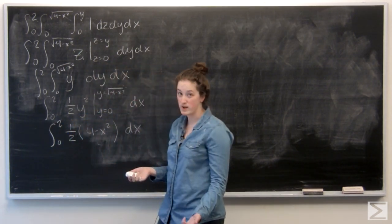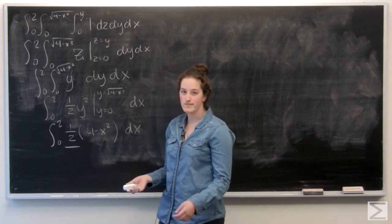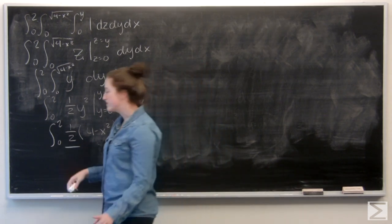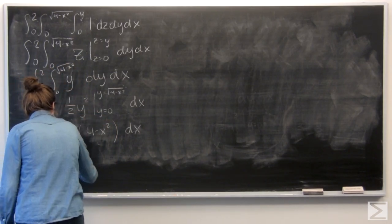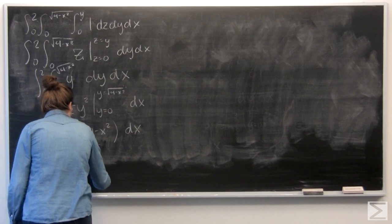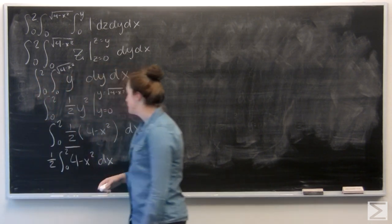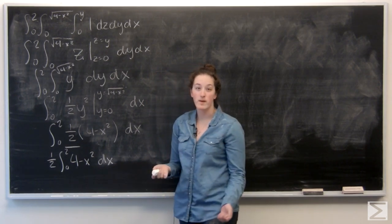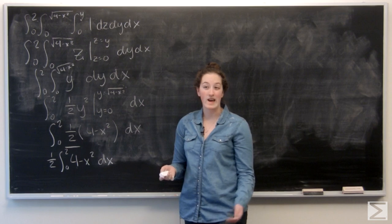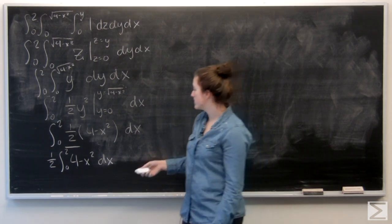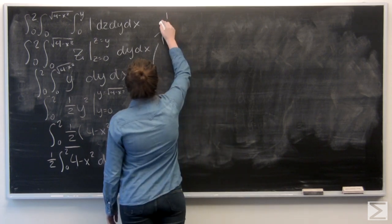And now I'm left just integrating with respect to x. So, this 1 half is really just a constant. I'm going to pull it out, just to make it a little easier. So now we're looking to integrate 4 minus x squared. 4 becomes 4x, and x squared becomes 1 third x to the third.